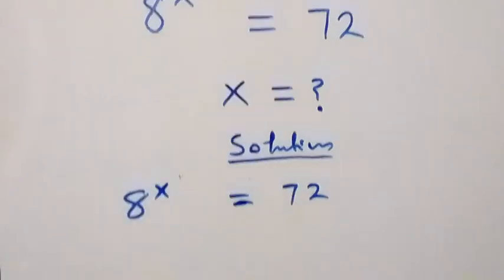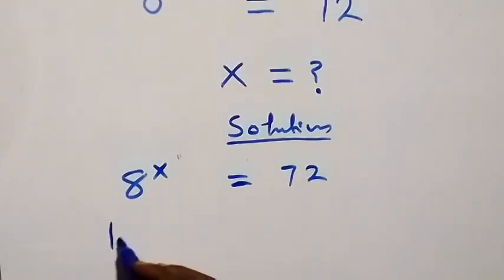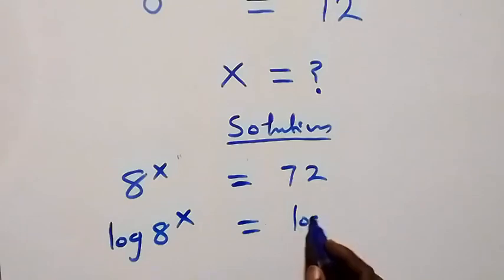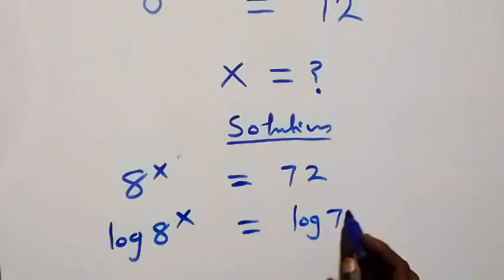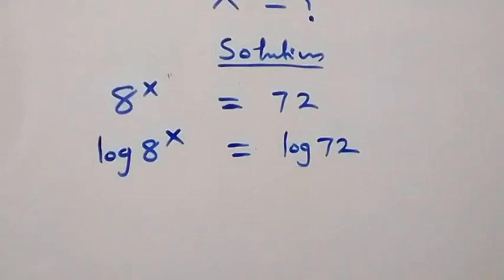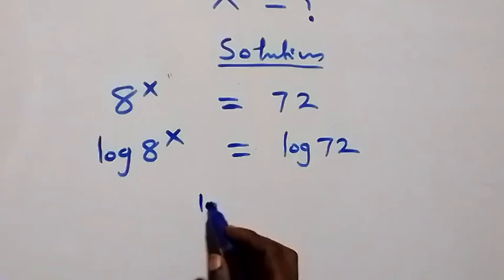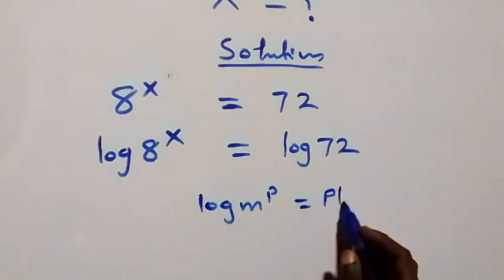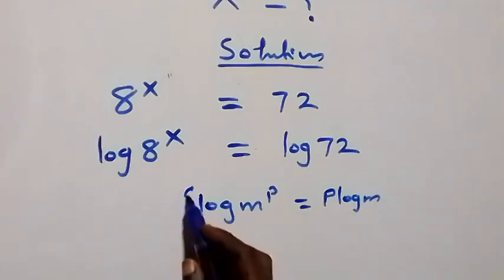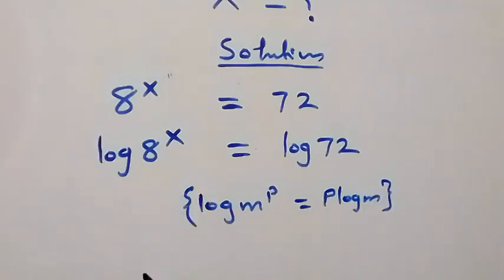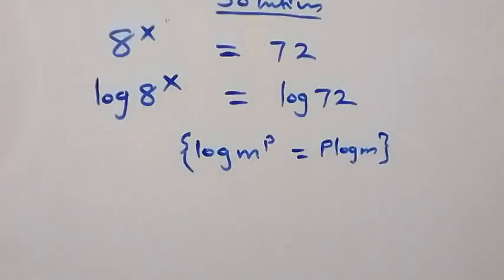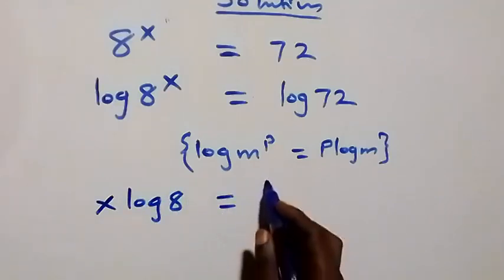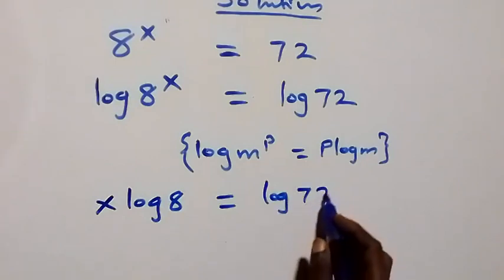Let's take the log on both sides. We have log of 8 raised to power x equals log 72. Applying the power law of logarithms, which states log m raised to power p equals p log m, the power x comes down and we have x log 8 equals log 72.